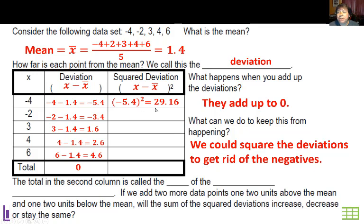Alright and so I'm going to take the x minus x bar which is the deviation and square it. Negative 5.4 squared is 29.16. Negative 3.4 squared is 11.56 and I just keep doing that and I add them all up.